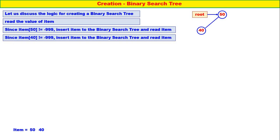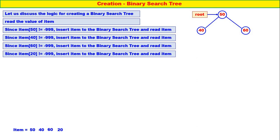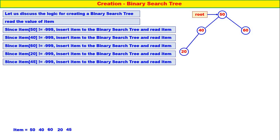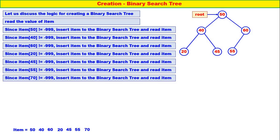40 is inserted as the left child of 50. Read one more item: 60. Item 60 is not equal to minus 99, therefore insert 60 into the binary search tree. 60 is inserted as the right child of 50. Read one more item: 20. Since item 20 is not equal to minus 99, insert 20 — so 20 is inserted as the left child of 40. Read one more: 45. Since 45 is not equal to minus 99, insert 45 into binary search tree — 45 is inserted as the right child of 40. Read one more: 55. Item 55 is not equal to minus 99, therefore insert 55 into the binary search tree — 55 is the left child of 60. Read one more: 70. Item 70 is not equal to minus 99, therefore insert 70 — 70 is inserted as the right child of 60.